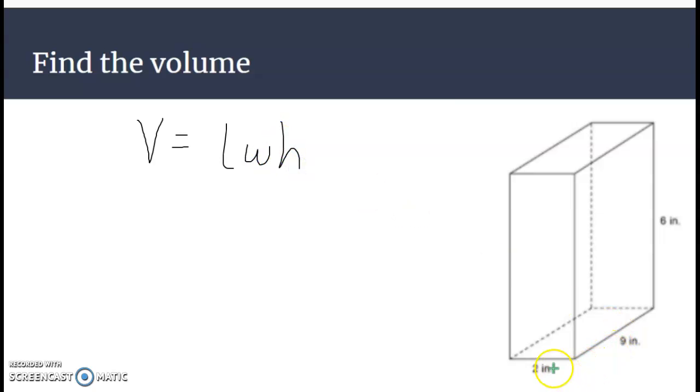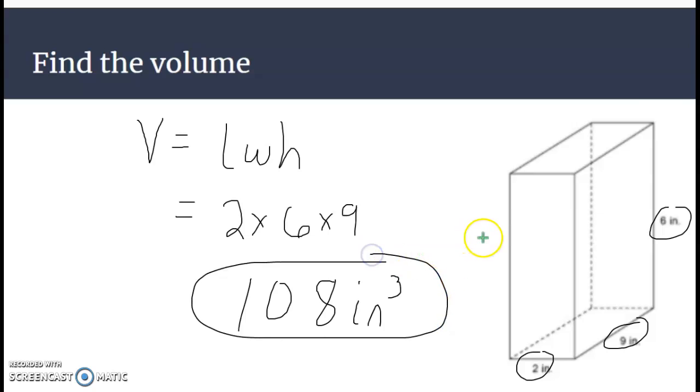In this image here we have a 2, a 9, and a 6. So to find this volume, it's simply a matter of 2 times 6 times 9. And we get 108. We would label that as inches cubed. That is the volume of this rectangular prism.